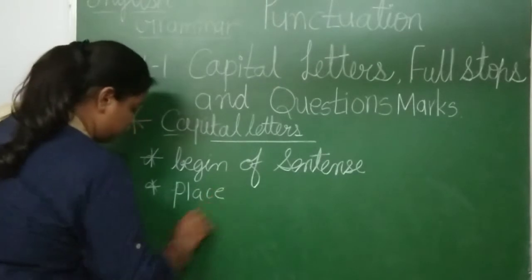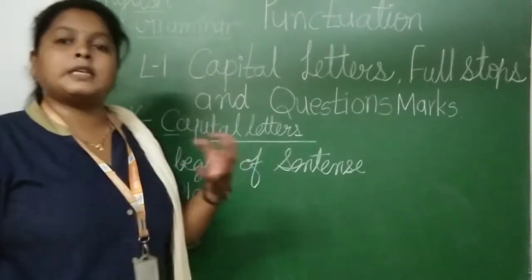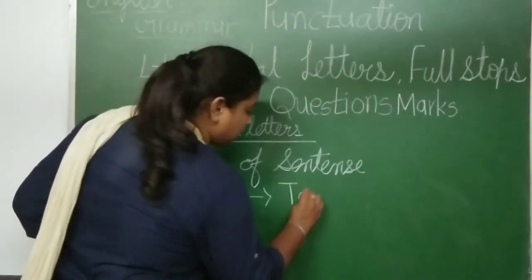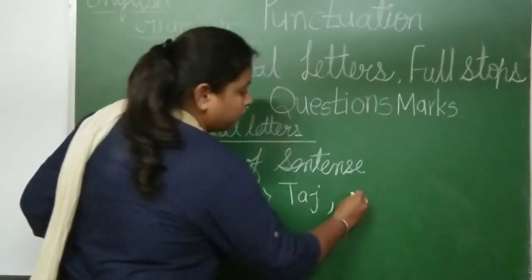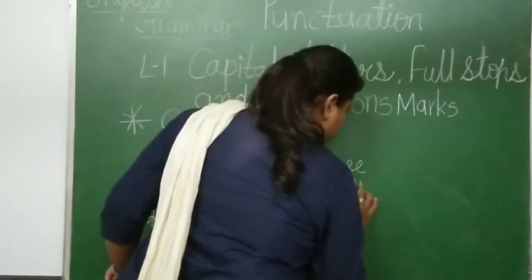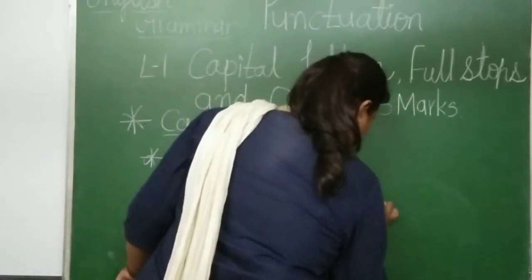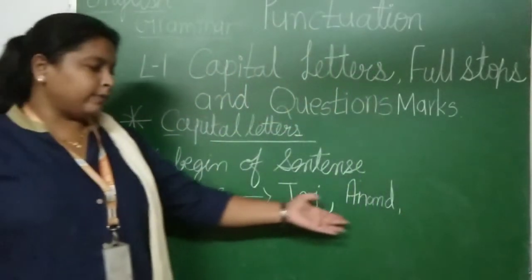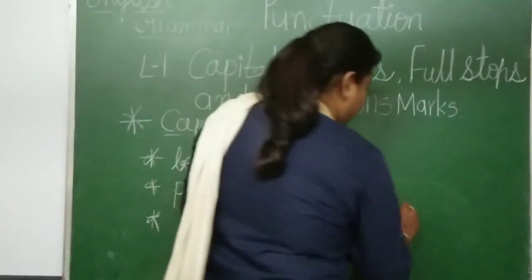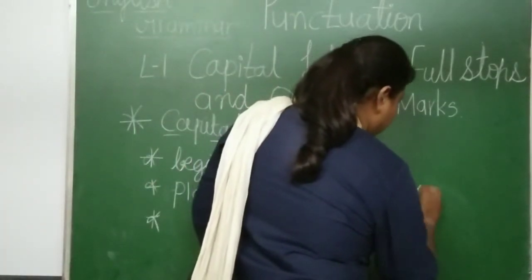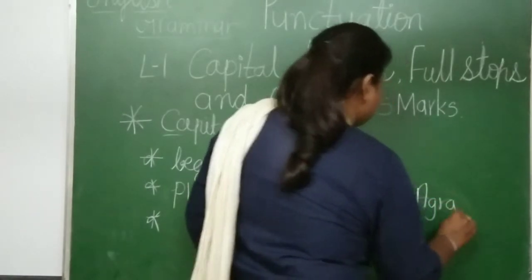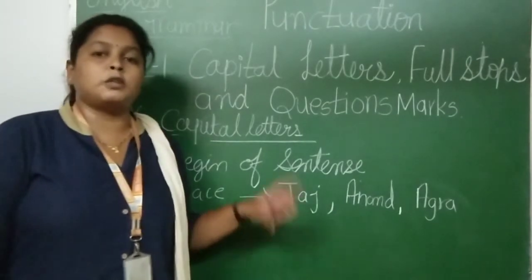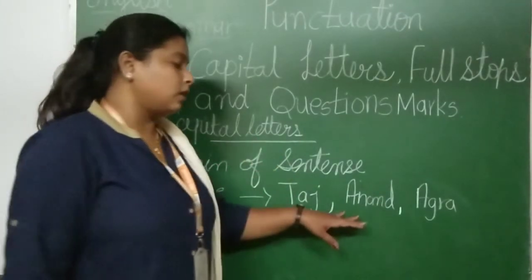After that: place names. When you are writing a place, for example Anand Park — that is the name of a park, so that will come in capitals. Similarly, Agra — that is also the name of a place. Wherever you write about a place, the place name should be capital.